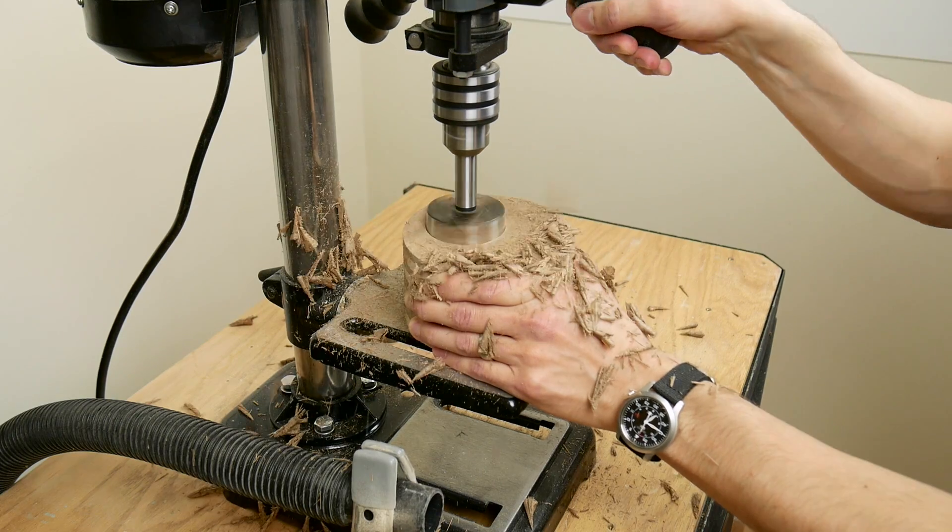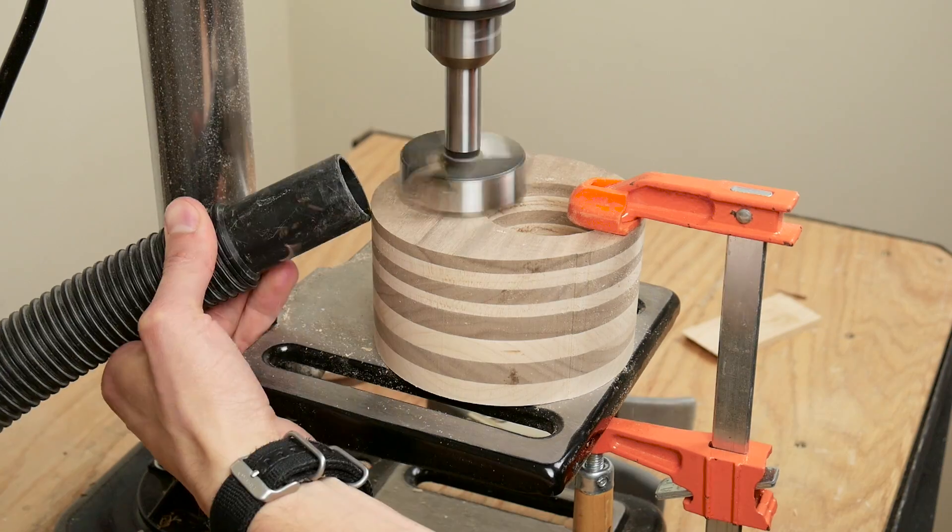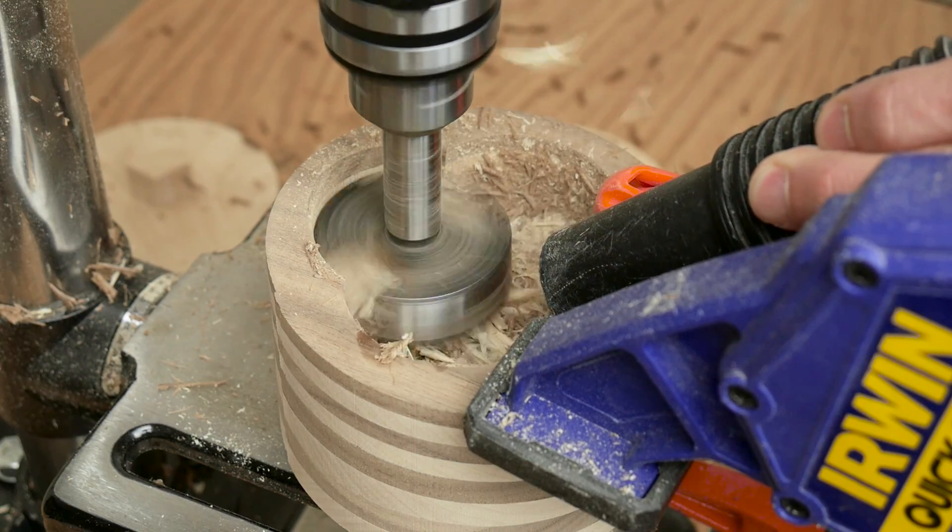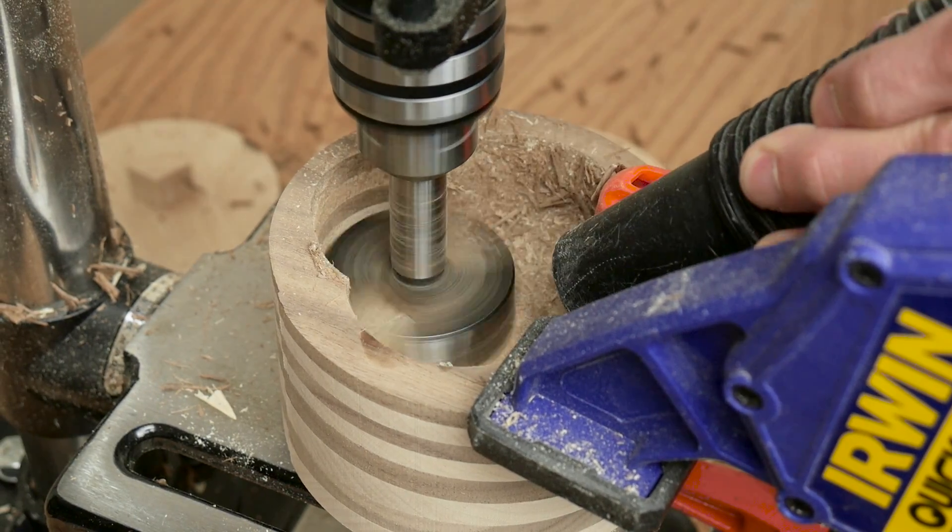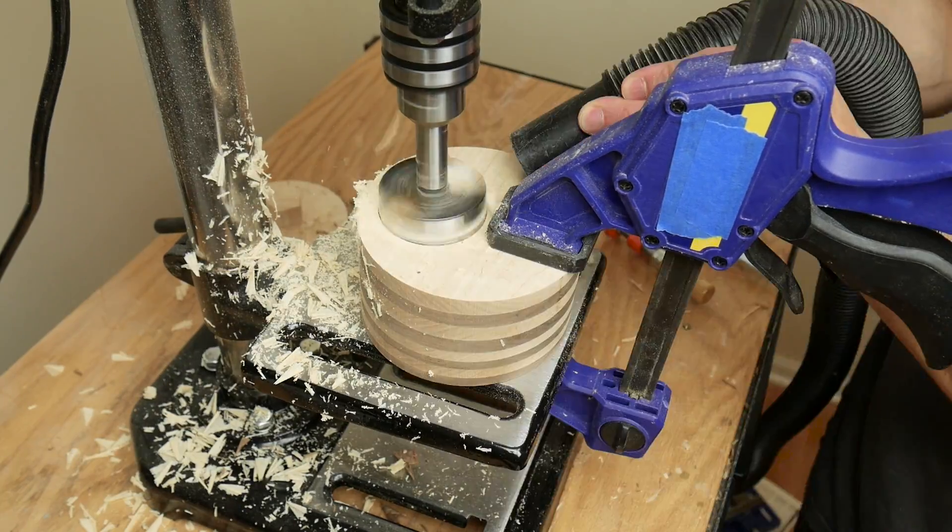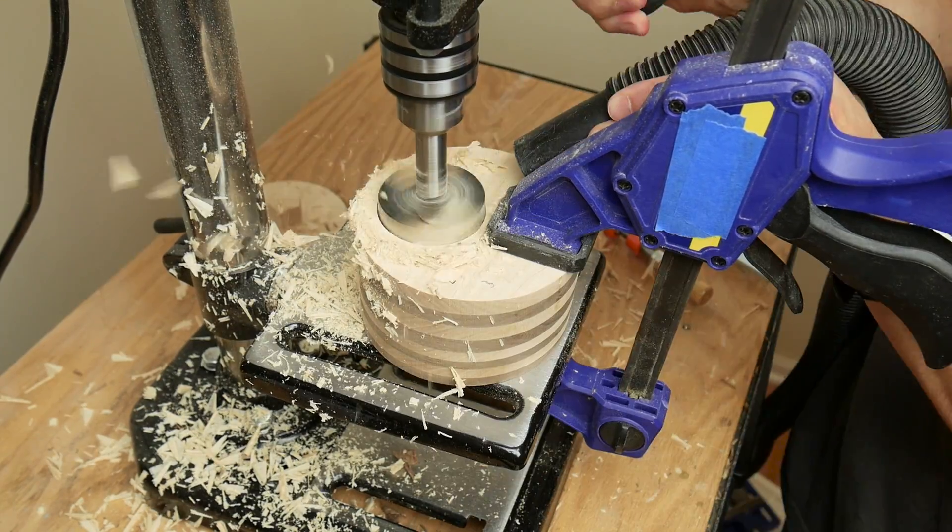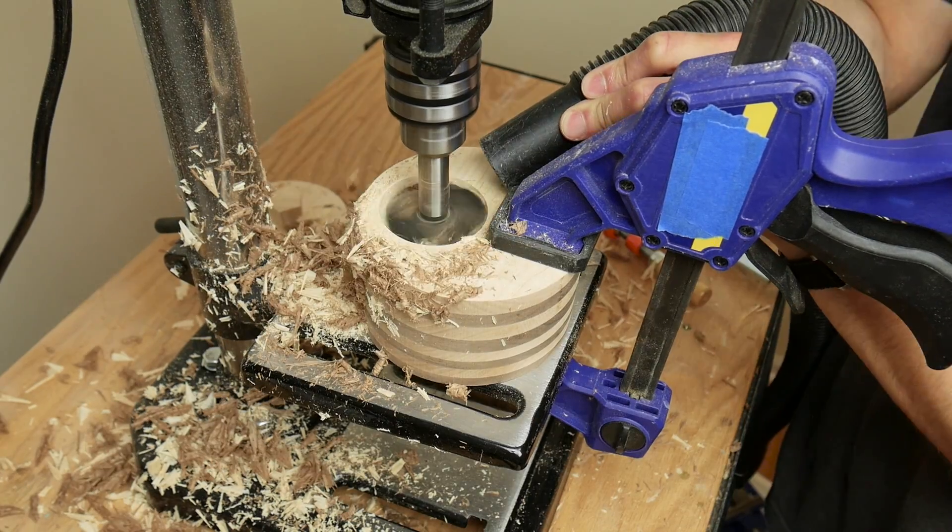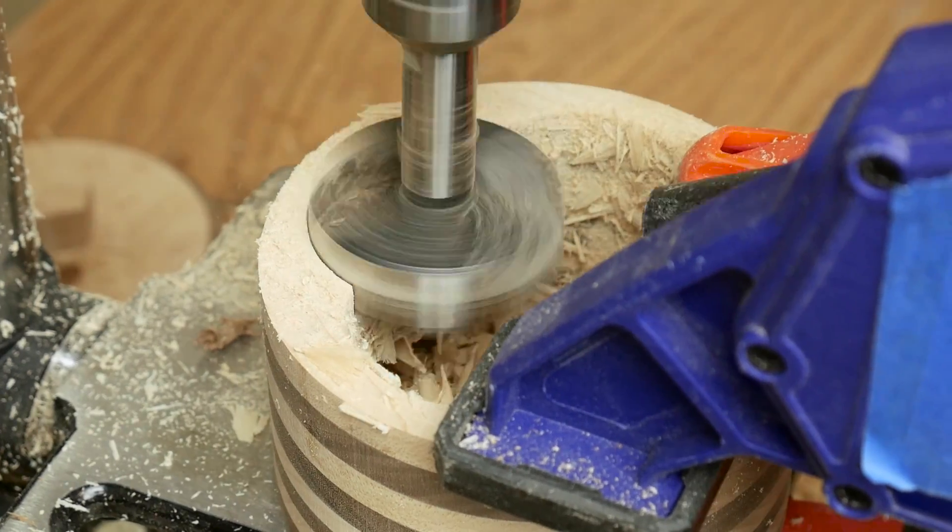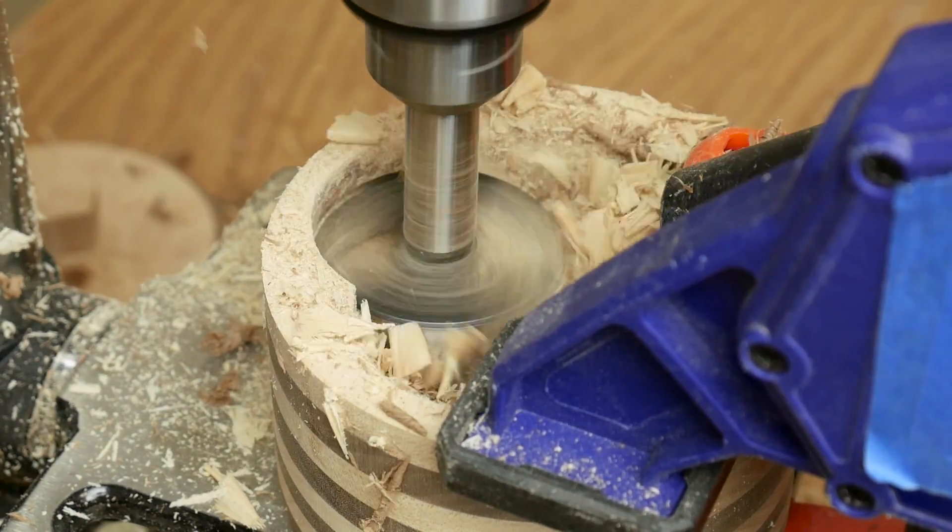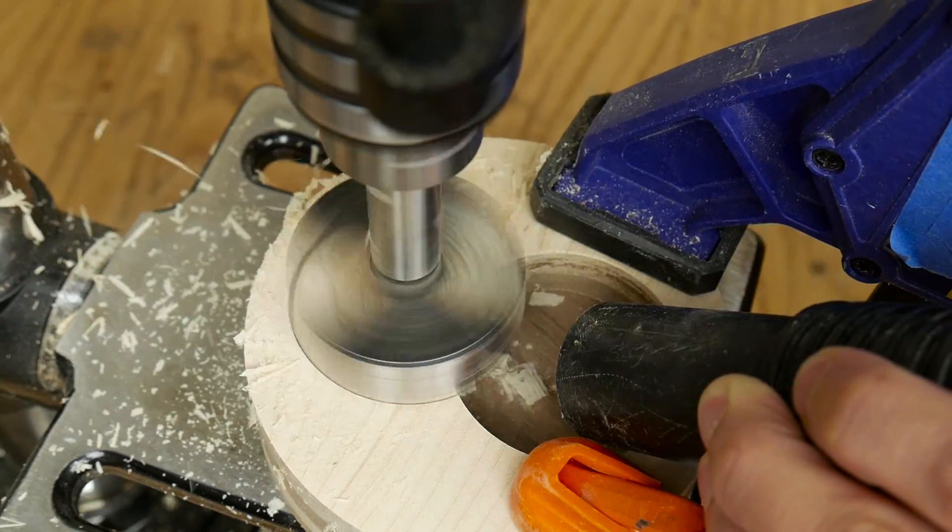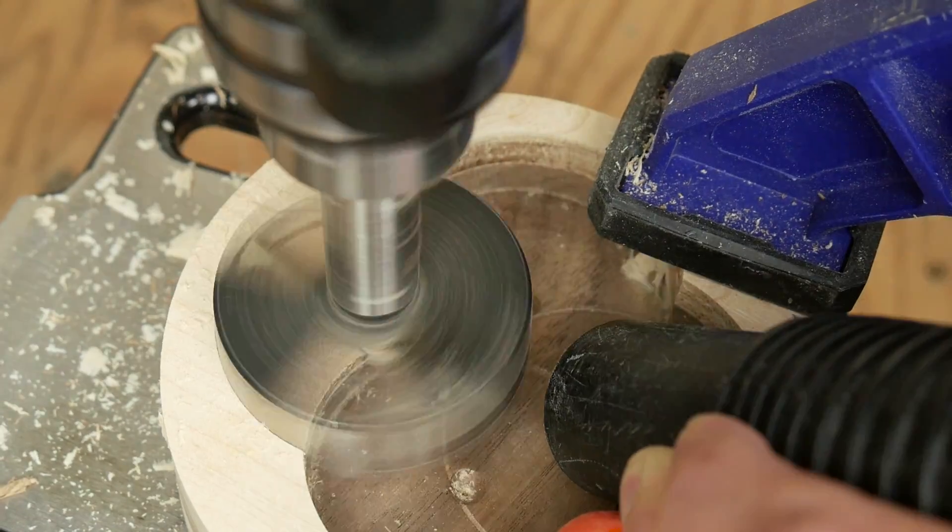I used the largest forstner bit I own to drill out the center of the main section of the base and top of the lamp. I drilled about halfway through with the forstner bit. Then used a small bit to drill all the way through. Then flipped the pieces and used the small holes to line up the forstner bit so I could drill all the way through. This forstner bit is a little too much for my little drill press to handle, so it was slow going but I eventually made it all the way through both pieces.